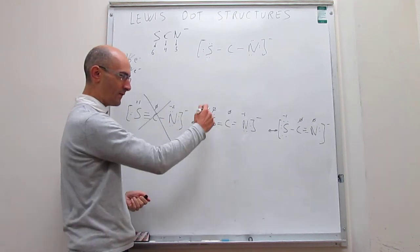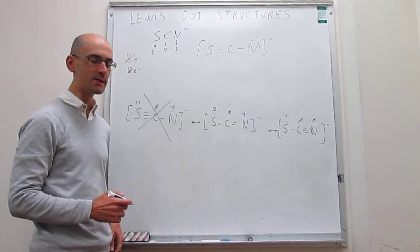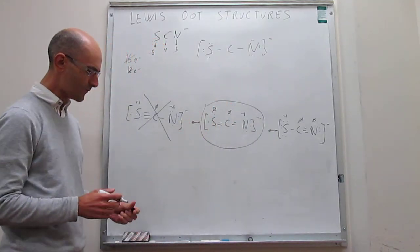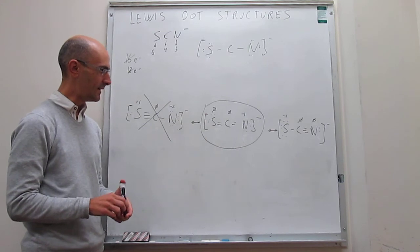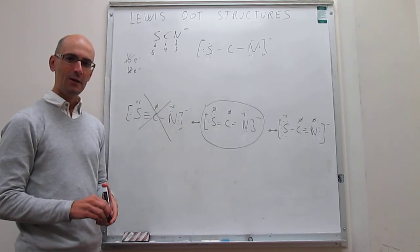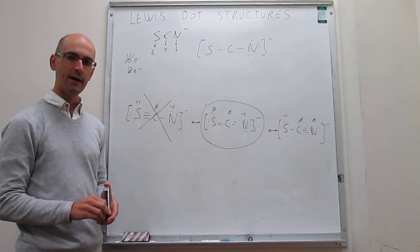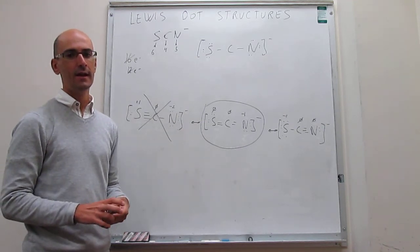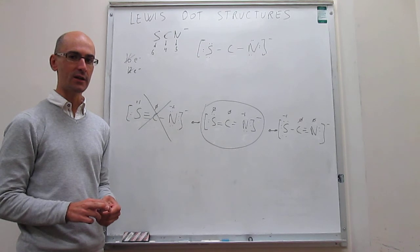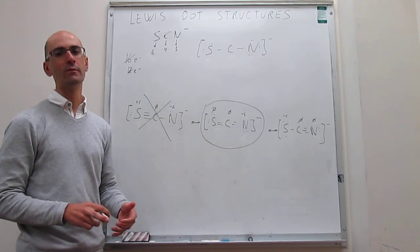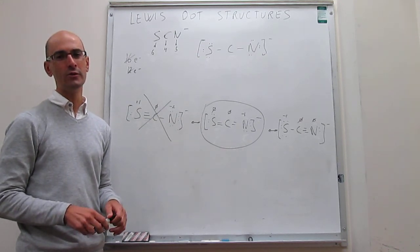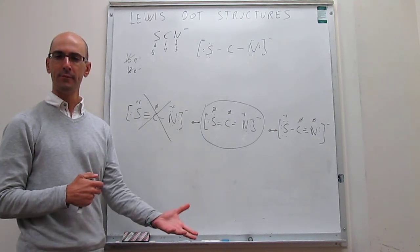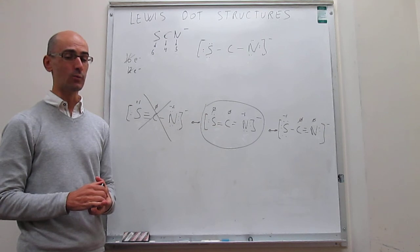So if we have to choose one of these three structures as representing reality, the one that seems best according to formal charge — which is the central structure with double bonds to both sulfur and nitrogen — would be the most representative. In this video, we have drawn the Lewis dot structure for the thiocyanate ion, introduced the concept of formal charge, how to calculate formal charge, and how to use formal charges to determine which of a set of possible Lewis dot structures is the most reasonable.